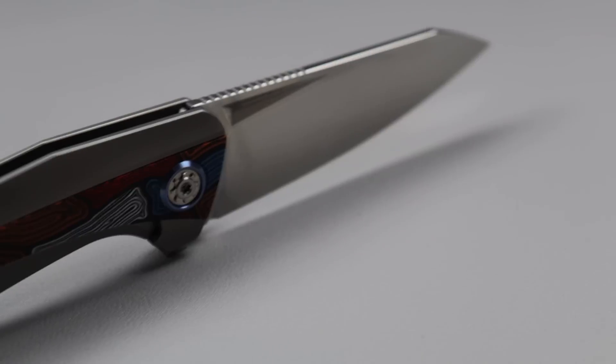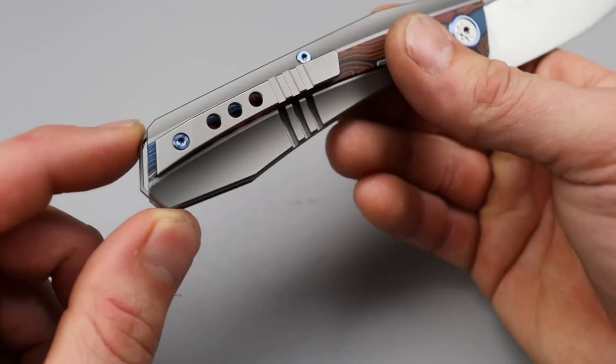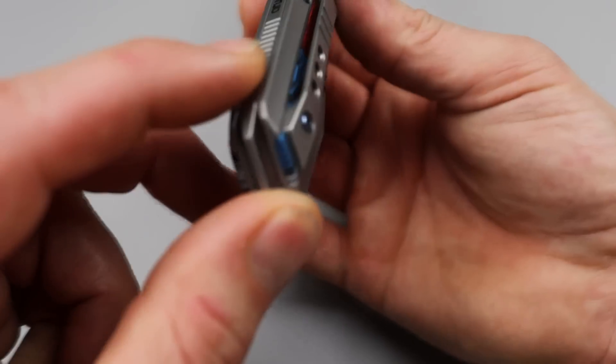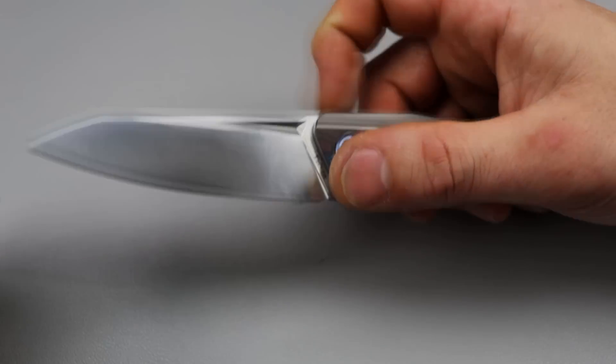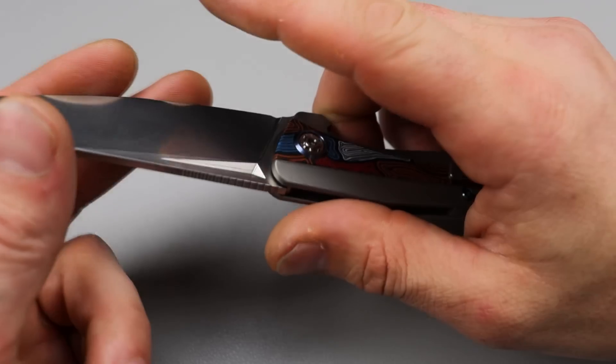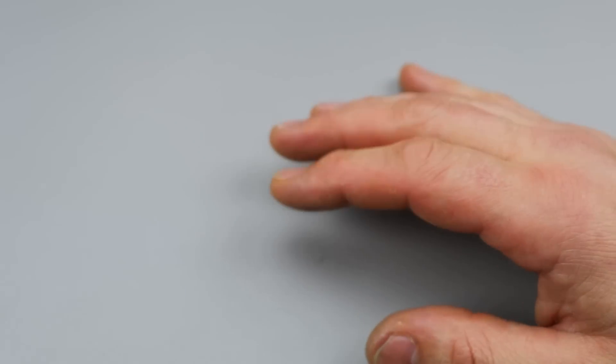Very ergonomic. We do have a titanium mill pocket clip and backspacer. Nice way to do the lanyard hole back here. It is kind of hidden, but very comfortable in the hand. And the sheep's foot blade, M390 steel, is going to cut very, very well. And it's going to be great for EDC tasks. This is a pretty good knife.